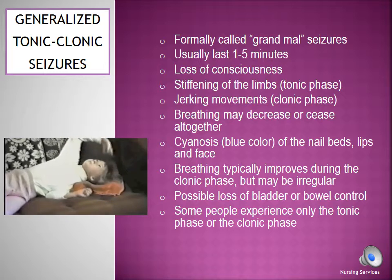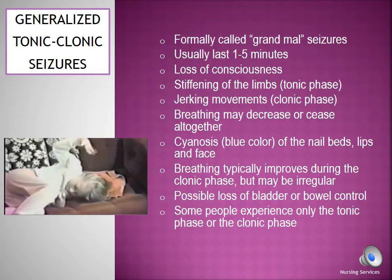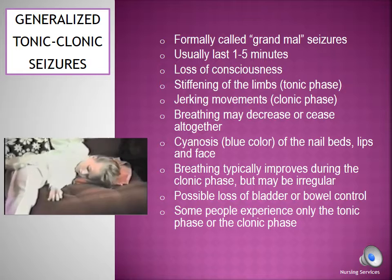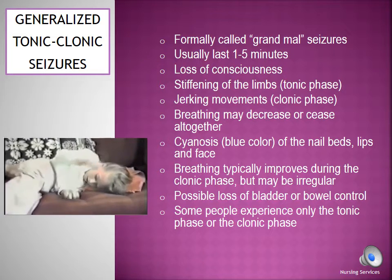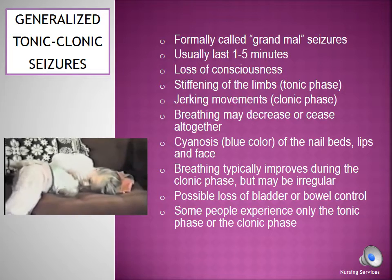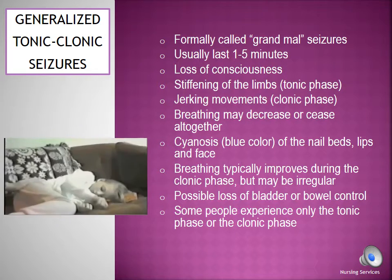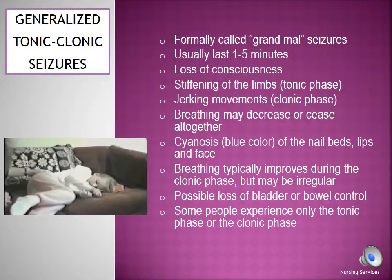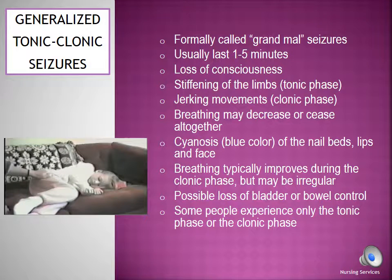The most well-known of all the generalized seizures are tonic-clonic seizures, also called grand mal seizures. They usually last less than 5 minutes but can continue for up to 30 to 45 minutes. They are identified by a loss of consciousness, stiffening of the arms and legs (the tonic phase), followed by a jerking movement (the clonic phase). There may also be a loss of bladder or bowel control. These seizures can be life-threatening due to impaired breathing, which can lead to decreased oxygen to the brain. The longer the seizure continues, the more danger of injury to the brain. Because of impaired breathing patterns, ashen or blue skin discoloring often occurs.